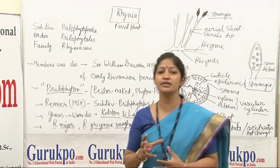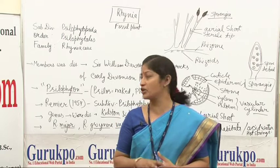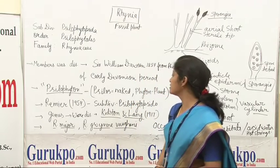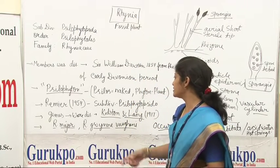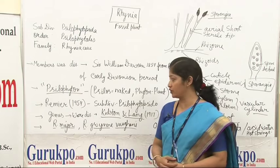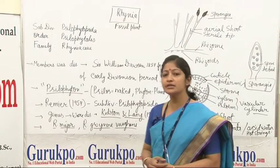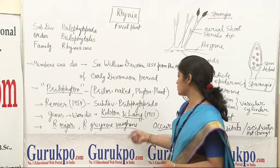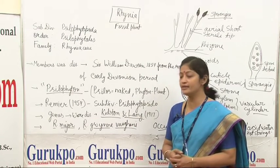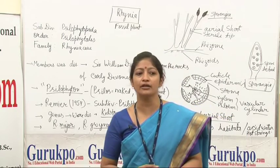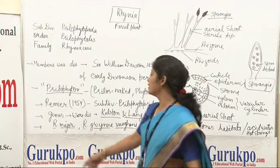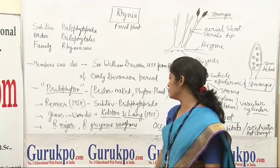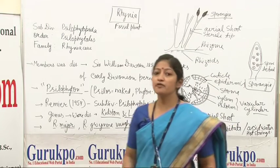It means it consists of a very simple structure. Rimmer in 1954 placed this Rhynia plant in subdivision Psilophytopsida, and the genus of Rhynia was discovered by Kidstone and Lang in 1917. Two species of Rhynia were reported: one is Rhynia major and the next is Rhynia gwynne-vaughanii.